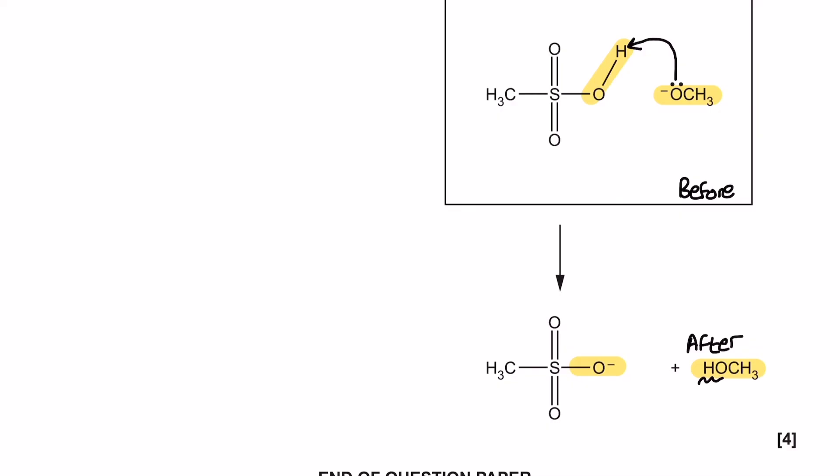Because what we haven't done is explained why the oxygen in the after section on this larger organic molecule has a negative charge. Well, these electrons from this bond to the hydrogen have to go somewhere, and they go here onto the oxygen to explain that final product.